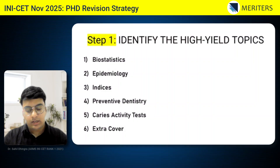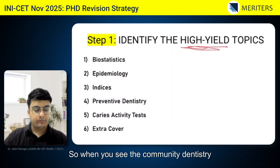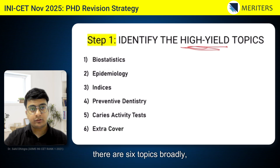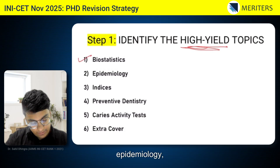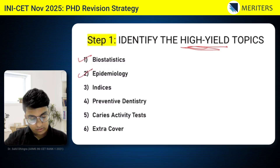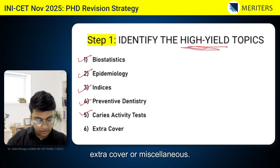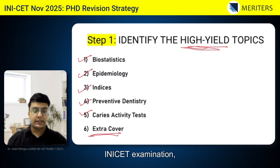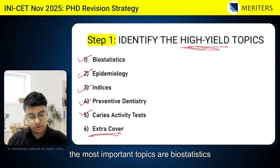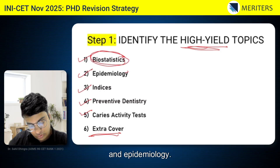Step 1: Identify the high-gear topics. When you see the community dentistry syllabus, there are six topics broadly: Biostatistics, Epidemiology, Indices, Preventive Dentistry, Caries Activity Test, and Extra Cover or Miscellaneous. Out of these, for your AIIMS or INICET examination, the most important topics are Biostatistics and Epidemiology.